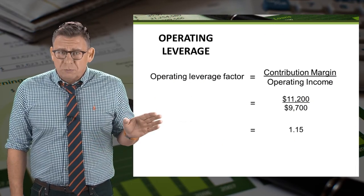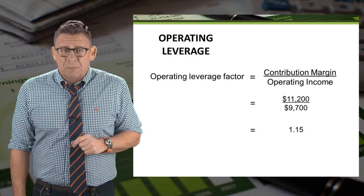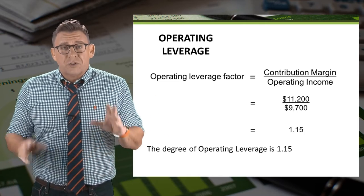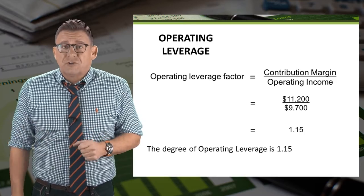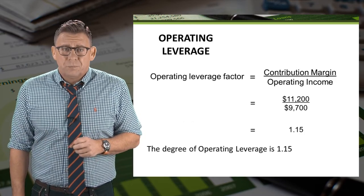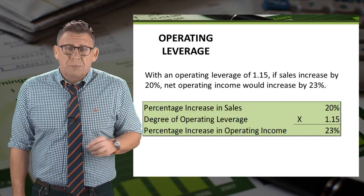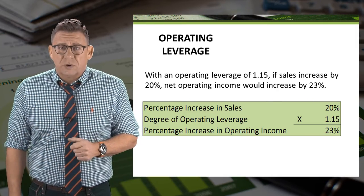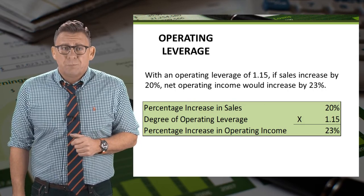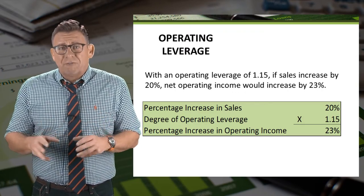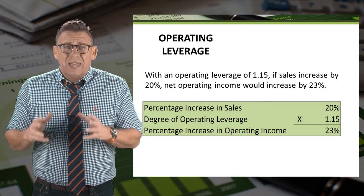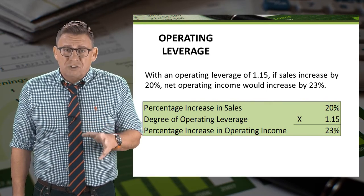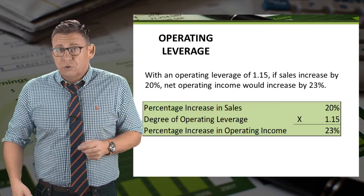When we divide contribution margin by operating income, we get a factor of 1.15. So the degree of operating leverage is 1.15. This means that a 20% increase in sales will result in a 23% increase in operating income. Operating leverage can be used to predict the impact on operating income based on changes in market conditions, both good or bad.